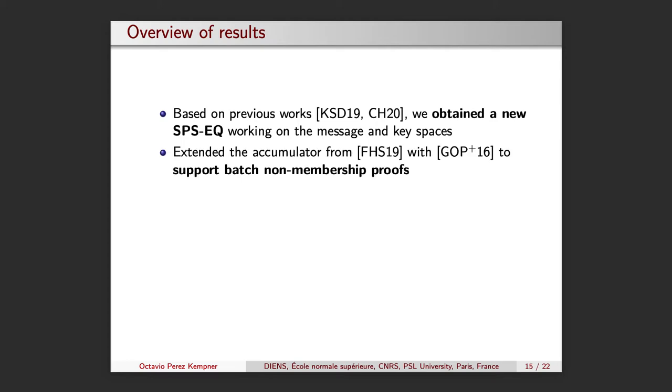We extended the accumulator to support batch non-membership proofs. We call this extension set commitment scheme supporting disjoint sets. With it users can now prove that they do not have a given set of attributes in their credentials by showing a single witness for the whole set.